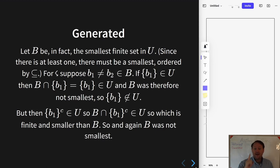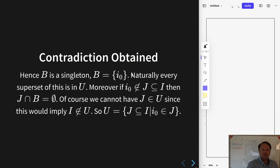And then, again, B was not smallest, well we can't have that either. So either way this runs into a contradiction. And so we know that B cannot contain some two distinct elements and therefore it must be a singleton set.